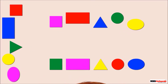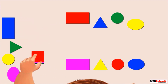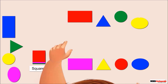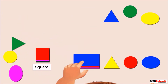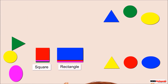First, Neil groups all the square shaped cards, and there are one, two, three square shaped cards. Then, he groups all the rectangle shaped cards. They are also three in total.